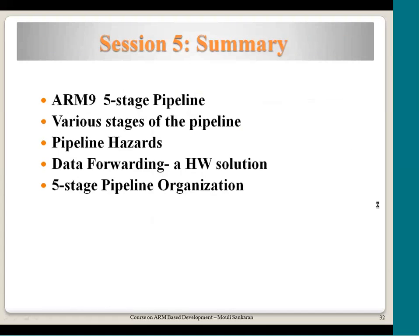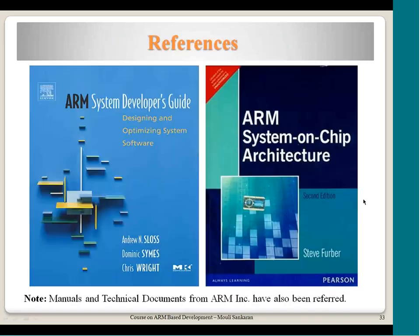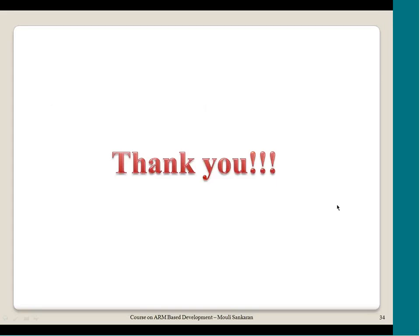We have come to the end of this class where we understood the five-stage pipeline, its various stages, how it is organized internally in ARM, and how data forwarding works across different stages. We also understood what pipeline hazards are and how they are solved using hardware. Thank you very much for your attention — this brings the end of Unit 2, and we will be starting with the instruction set of ARM7 from the next session.